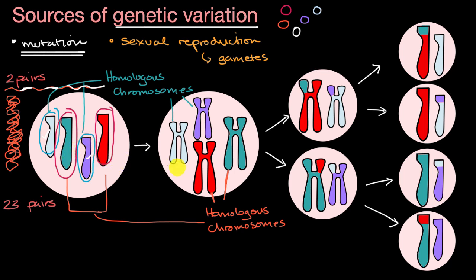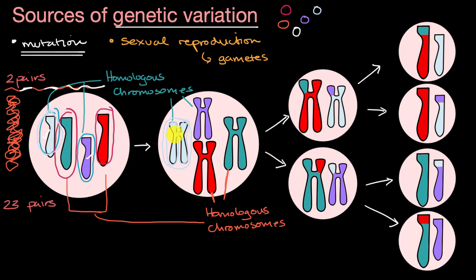As we go into meiosis, the first step is that the chromosomes are going to copy themselves into two sister chromatids. For example, this one right over here has now copied itself and has that telltale X shape, but this side — which we would call a chromatid — and this sister chromatid should be identical. There might be some errors introduced through mutation, but if we don't assume mutation, they would be identical.